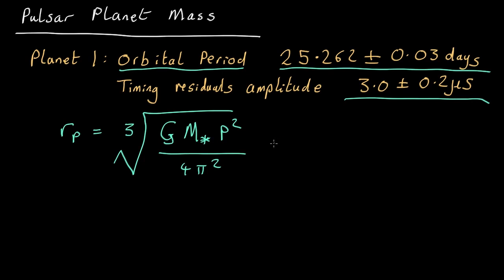And that will give us a value of 2.8 by 10 to the 10 meters, which is about 0.2 astronomical units. So this planet is 20% as far out as the Earth is from the sun. Okay, so that's got how far out it is.